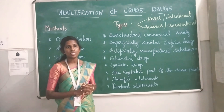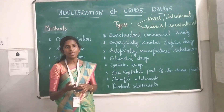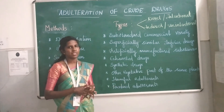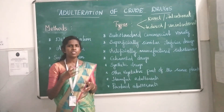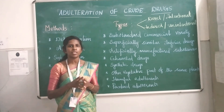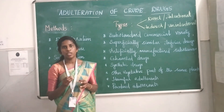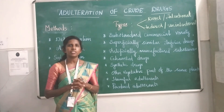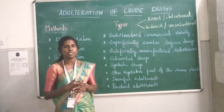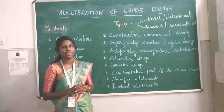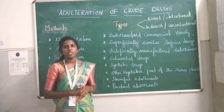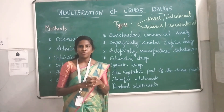The next type is harmful adulants. This is done deliberately to increase profit. For example, colophony is usually mixed with amber-colored glass pieces, which can cause harm to human beings. This type of adulteration is called harmful adulteration.